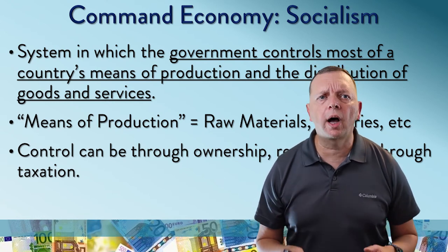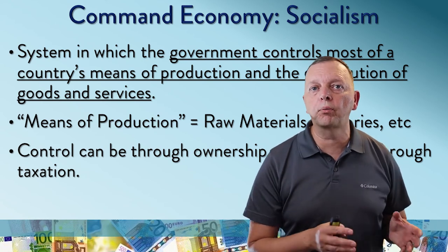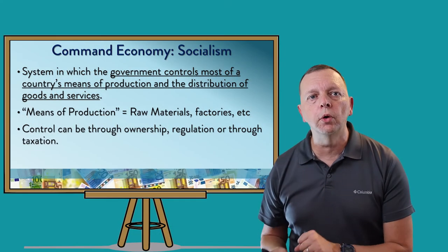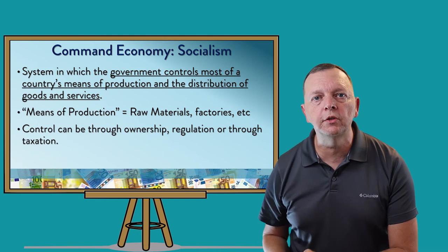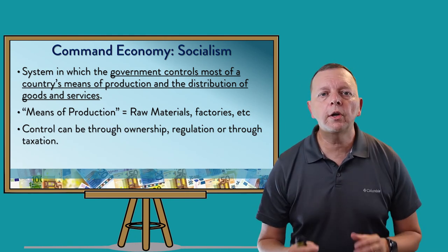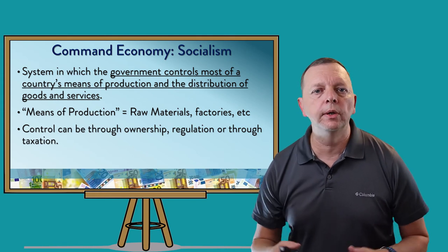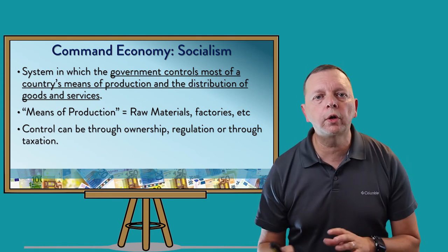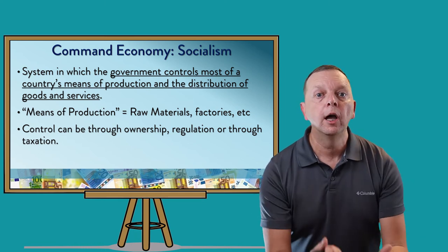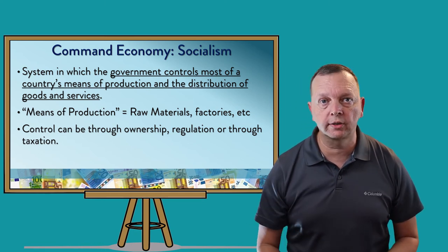While we don't have very many communist countries, we have a few that are socialist. Socialism is also a command economy. The difference here is that people can actually own property, but the government is still going to control most of the country's means for production and the distribution of goods. When we talk about means of production, we're going to talk about raw materials, factories, etc. This control can be exercised through several different things.